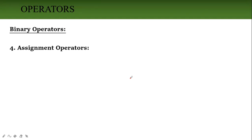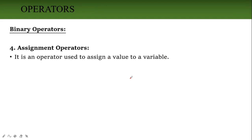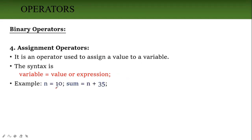Next is assignment operator. Assignment operator is used to assign a value to a variable. The assignment operator is the equal sign (=). The syntax is: variable = value or expression. For example, 'n = 10' assigns value 10 to variable n. 'sum = n + 35' means first 35 is added to n, and the result is assigned to sum. Don't confuse double equal (==) — that is the relational operator used for comparison — with single equal (=), which is the assignment operator used for assigning a value.